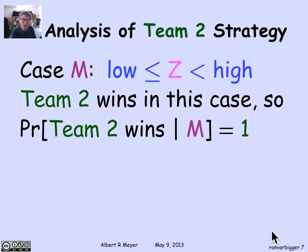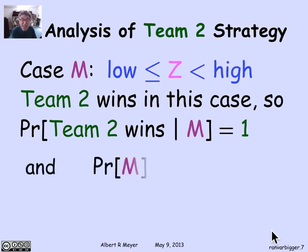How often does the middle case happen? The difference between low and high is at least 1, so there's guaranteed to be at least one chance in 7 that z falls between them. It could be more if low and high are further apart, but as long as they're at least one apart, there's at least a 1/7 chance of landing in between.